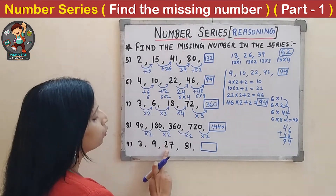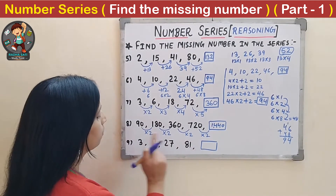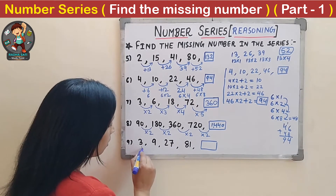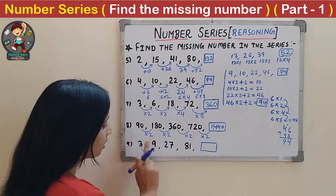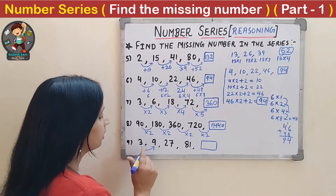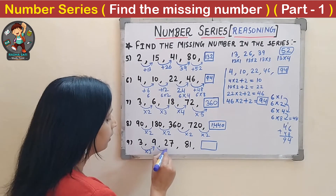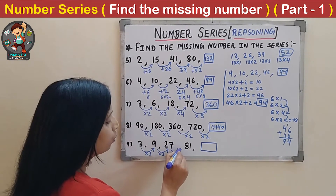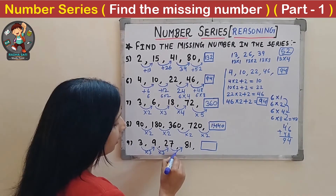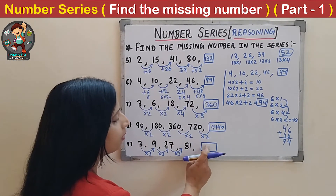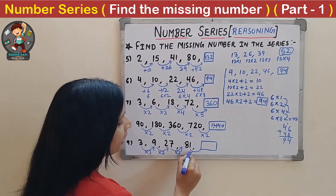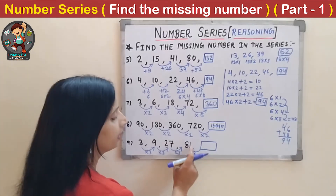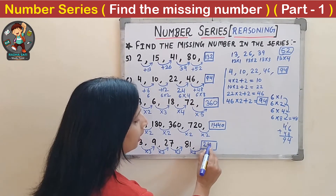Ninth question: 3, 9, 27, 81, _. Numbers are getting multiplied — each number is thrice the previous. 3×3 = 9, 9×3 = 27, 27×3 = 81. So the next is 81×3 = 243.